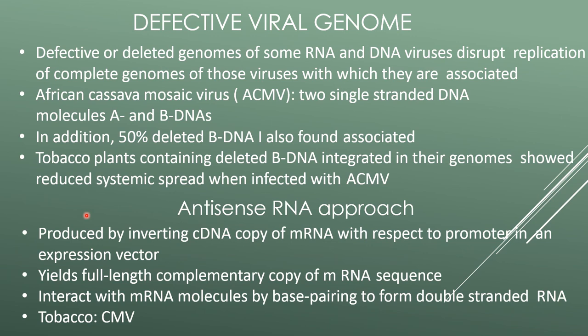Tobacco plants containing the deleted B DNA integrated into their genome showed reduced systemic spread when infected with African cassava mosaic virus. Antisense RNA approach: this is produced by inverting the cDNA copy of mRNA with respect to the promoter in an expression vector, yielding a full-length complementary copy of the mRNA sequence that interacts with mRNA molecules by base pairing to form double-stranded RNA.